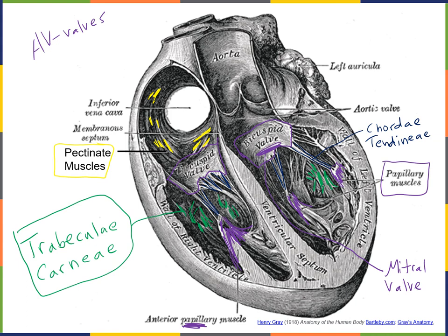A mitre is the type of pointed hat that bishops and popes wear, and that's where the name 'mitral valve' came from — the mitral valve has two flaps or cusps that have the appearance of the mitre worn by the pope. So the mitral valve, also known as the bicuspid valve, is the left AV valve that prevents blood from flowing backwards from the left ventricle into the left atrium.